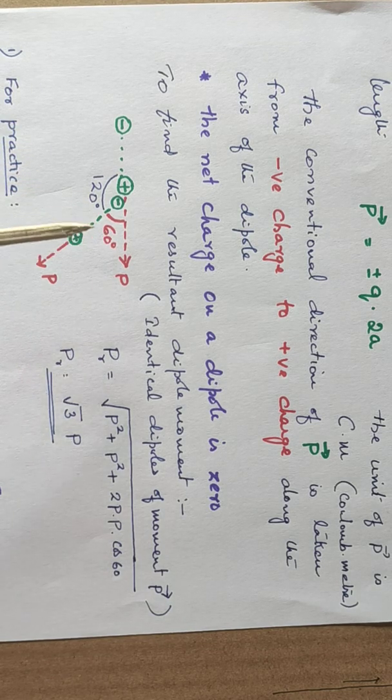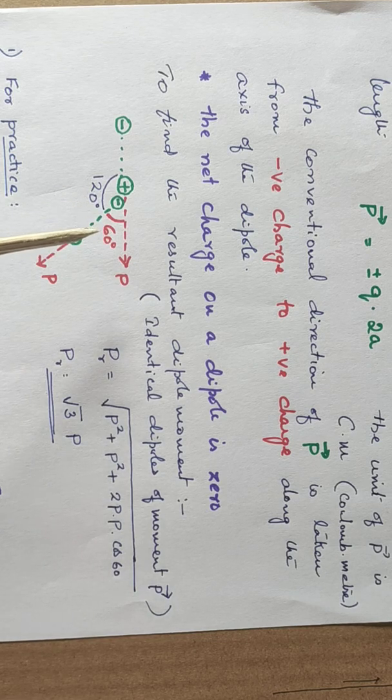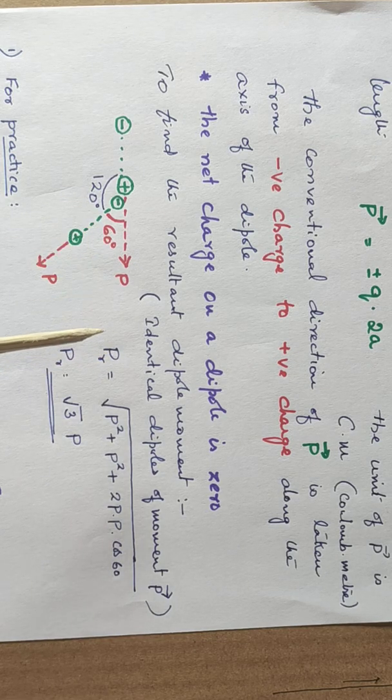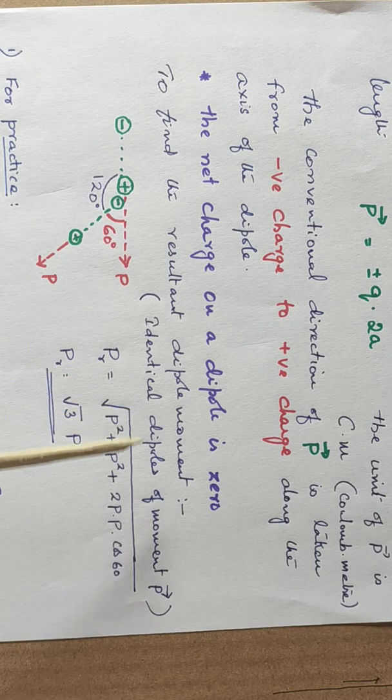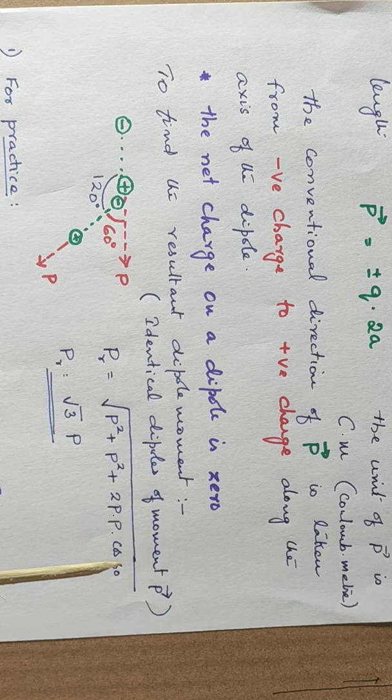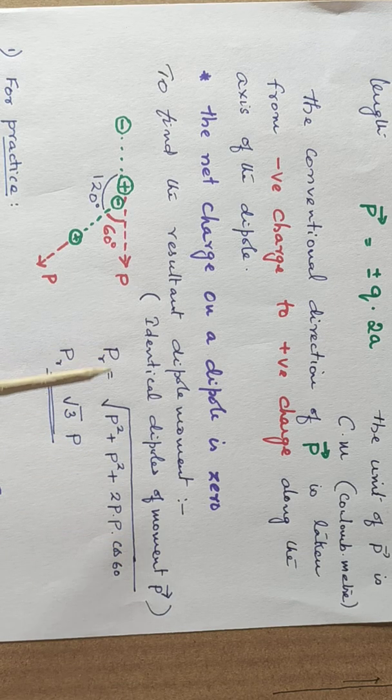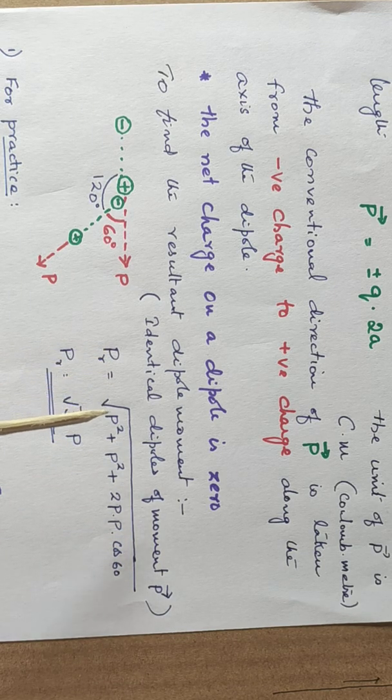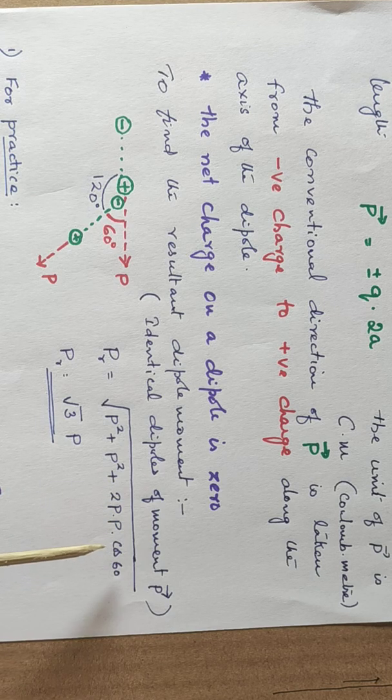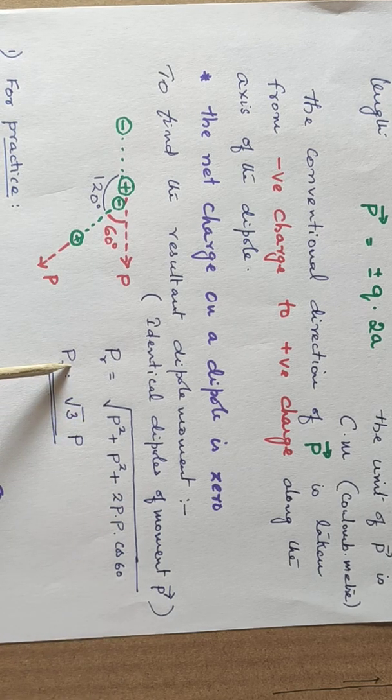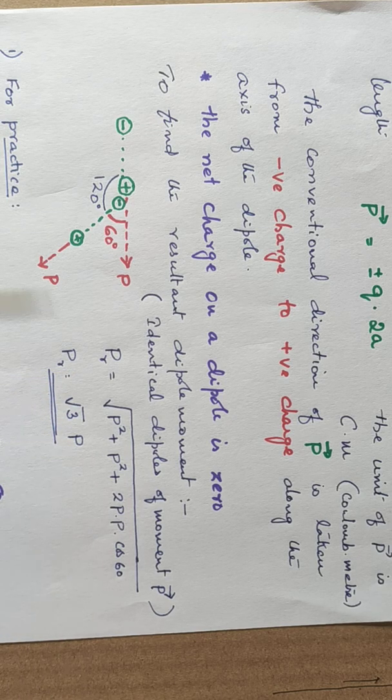So after identifying that angle, you will be considering the resultant as per the equation root of p square plus q square plus 2pq cos theta, the common expression. In that, you substitute pr equal to root of p square plus 2 into p into cos 60 so that the resultant will be equal to root 3 times p. Is that clear?